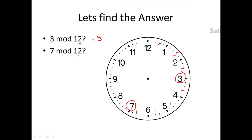Likewise, let's talk about what is 13 mod 12. Can you compute 13 mod 12 using this 12 o'clock? Counting clockwise — 1, 2, 3, 4, 5, 6, 7, 8, 9, 10, 11, 12 — and position 13 lands at 1. So the answer is 1.